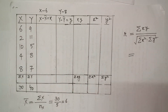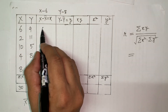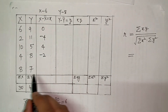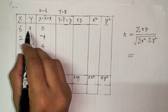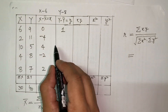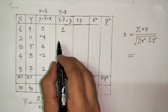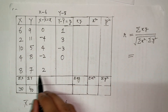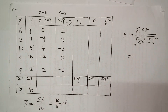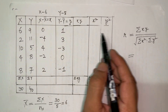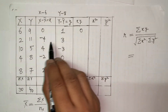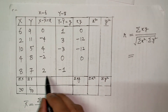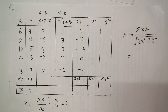Calculating small x (X − 6): 6−6 = 0, 2−6 = −4, 10−6 = 4, 4−6 = −2, 8−6 = 2. Calculating small y (Y − 8): 9−8 = 1, 11−8 = 3, 5−8 = −3, 8−8 = 0, 7−8 = −1. For the numerator I need to multiply small x by small y: 0×1 = 0, (−4)×3 = −12, 4×(−3) = −12, (−2)×0 = 0, 2×(−1) = −2.